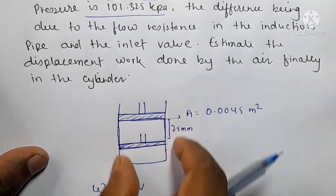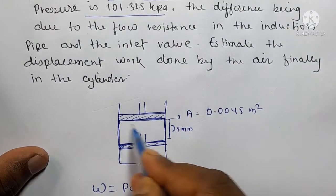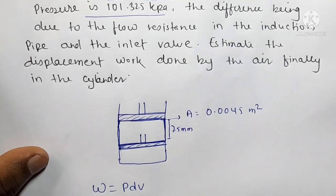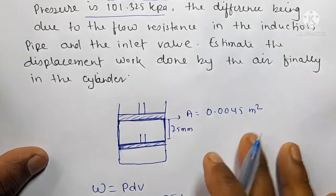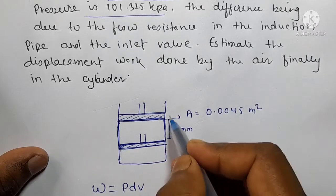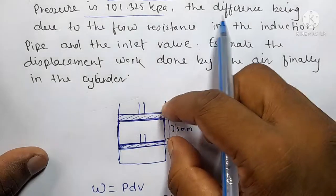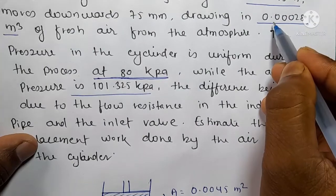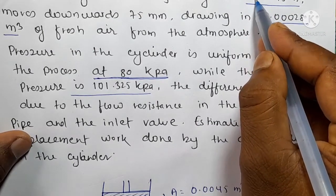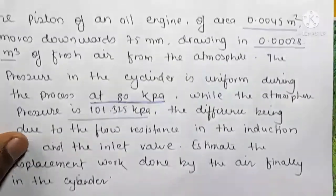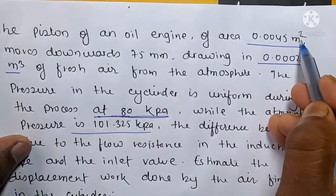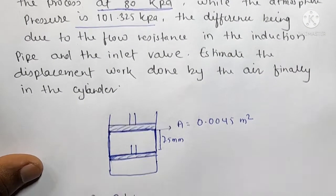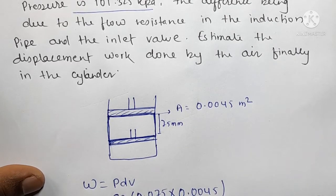The displaced volume equals the area of the cylinder cross-section multiplied by the stroke. The area is 0.0045 meter square, and the displacement is 75 mm, so volume equals 0.0045 meter square into 0.075, which equals this portion of the cylinder.